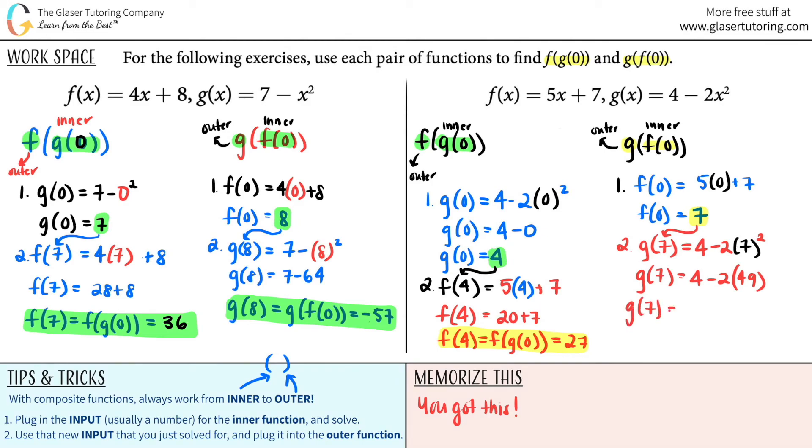So I can say g of 7 equals the same thing as g of f of 0, and that is equal to negative 94. And that's your answer for the second one. And look again. The answers are not the same. We use two of the same functions. However, the order matters greatly.